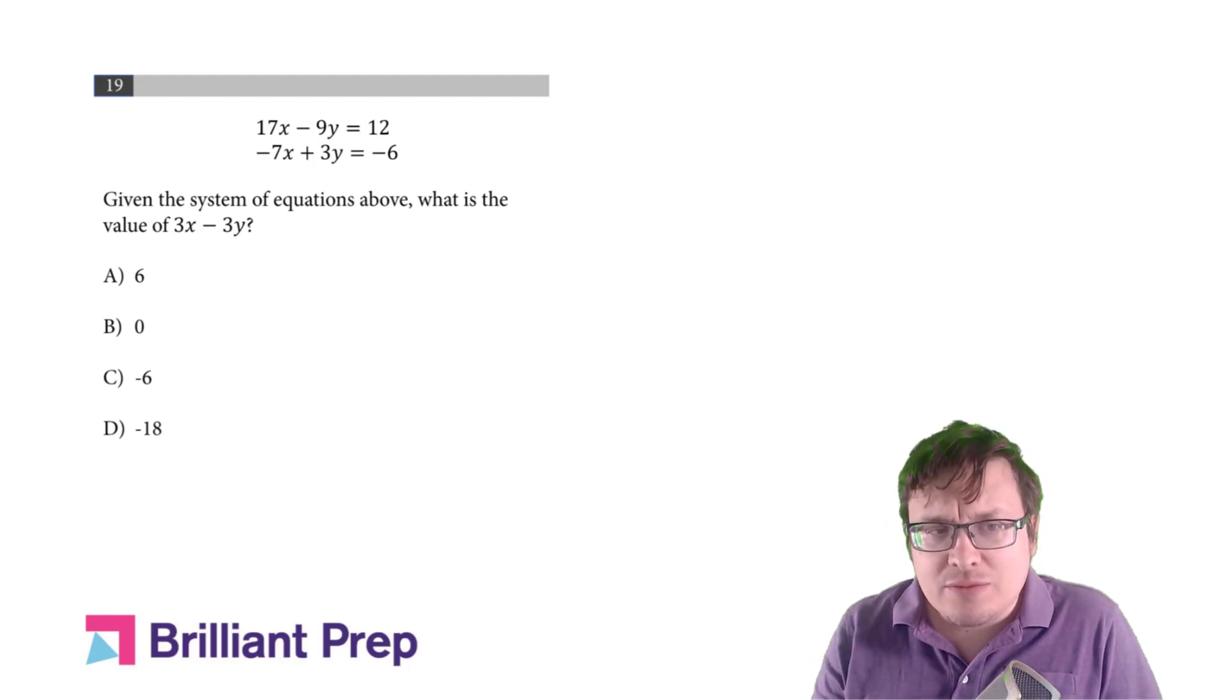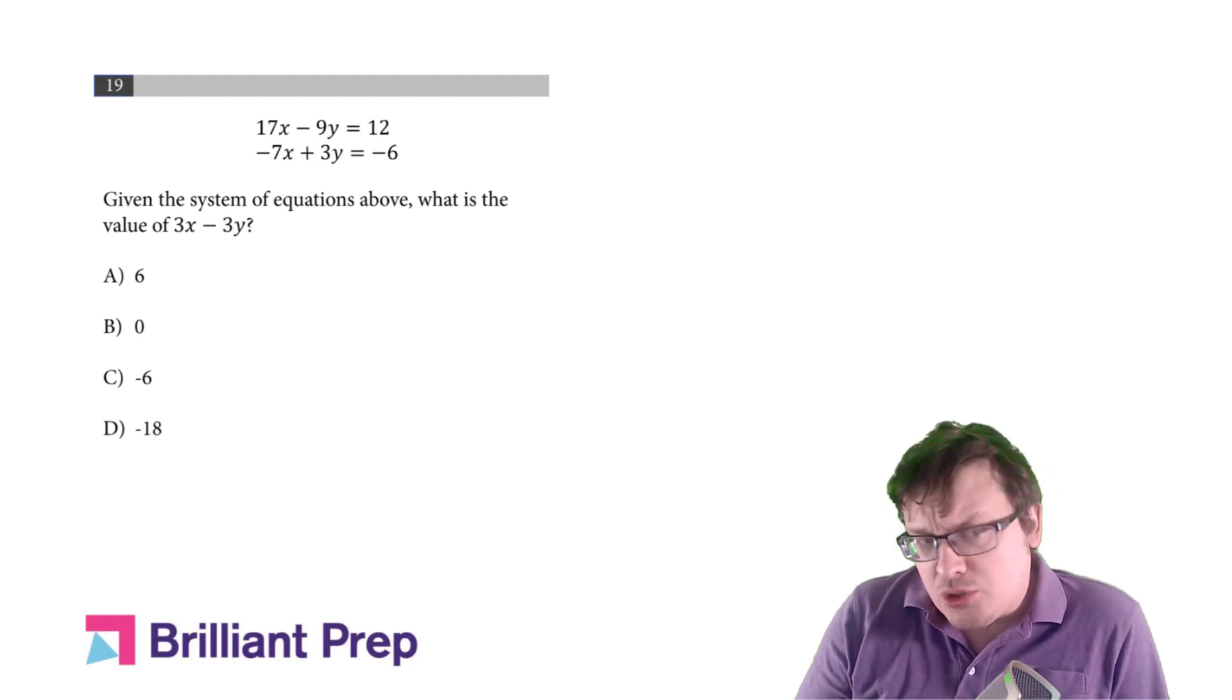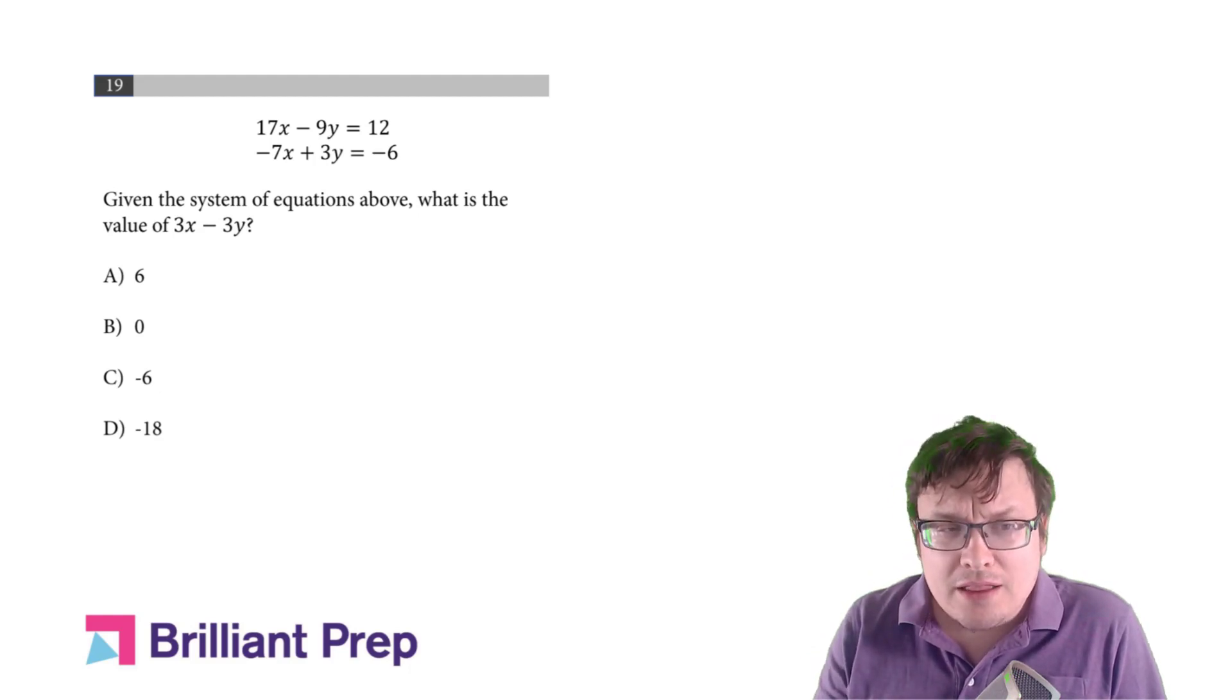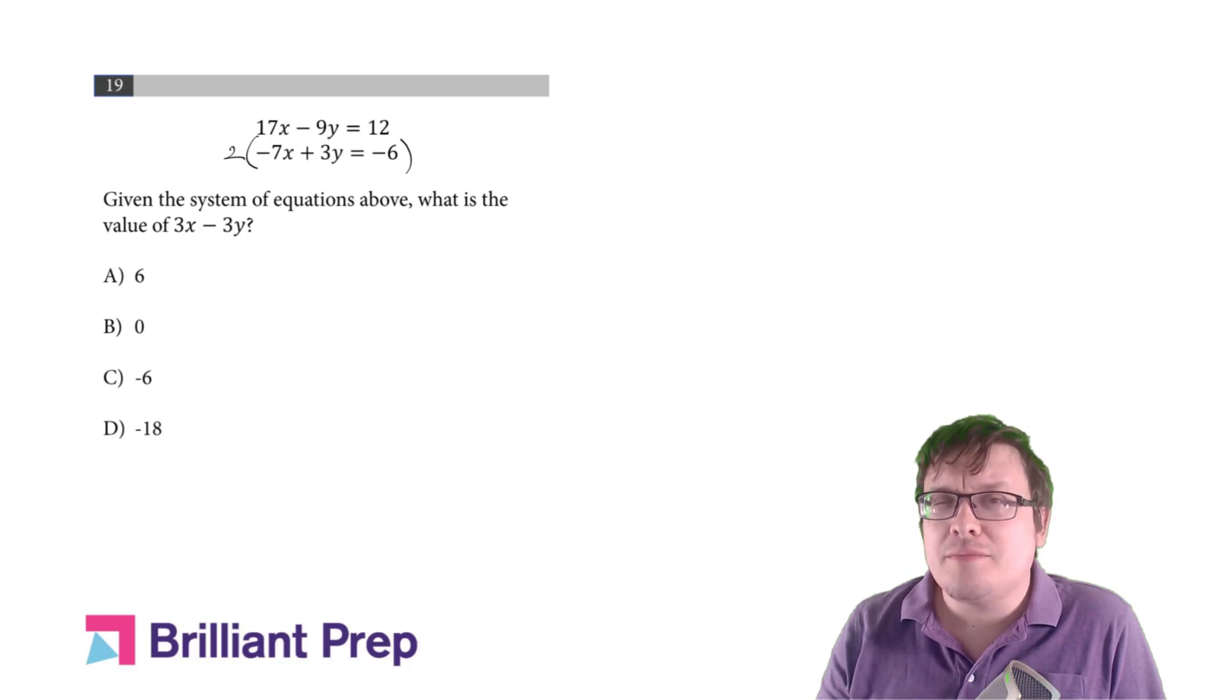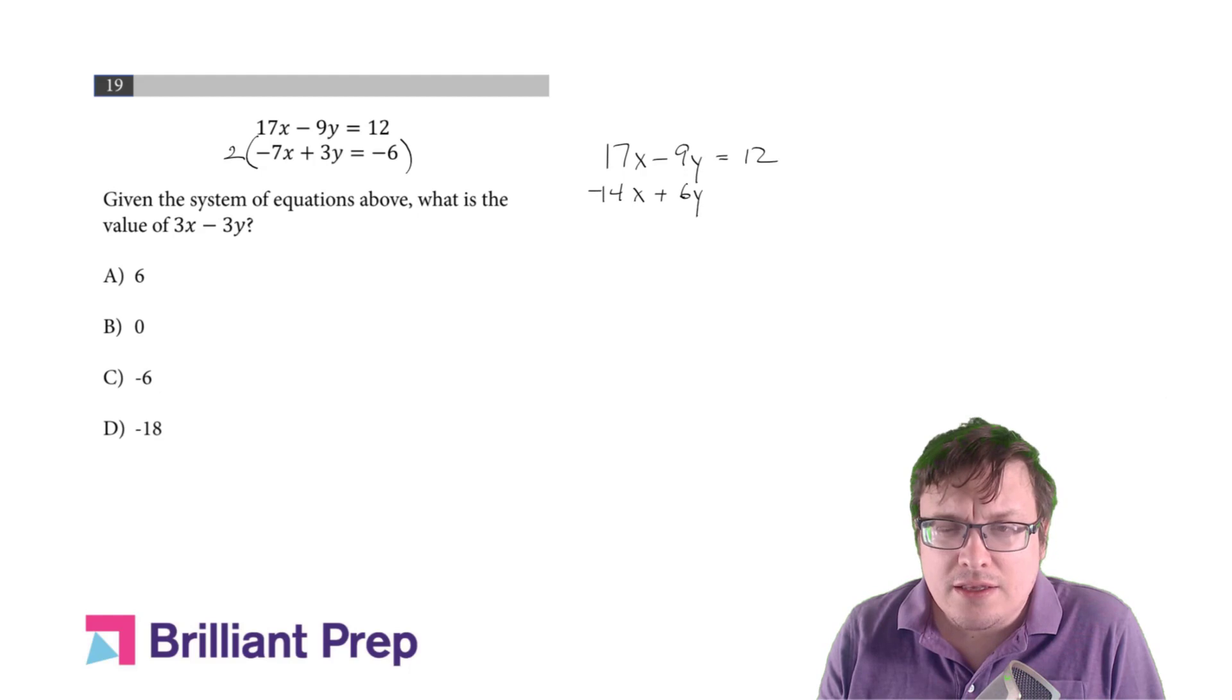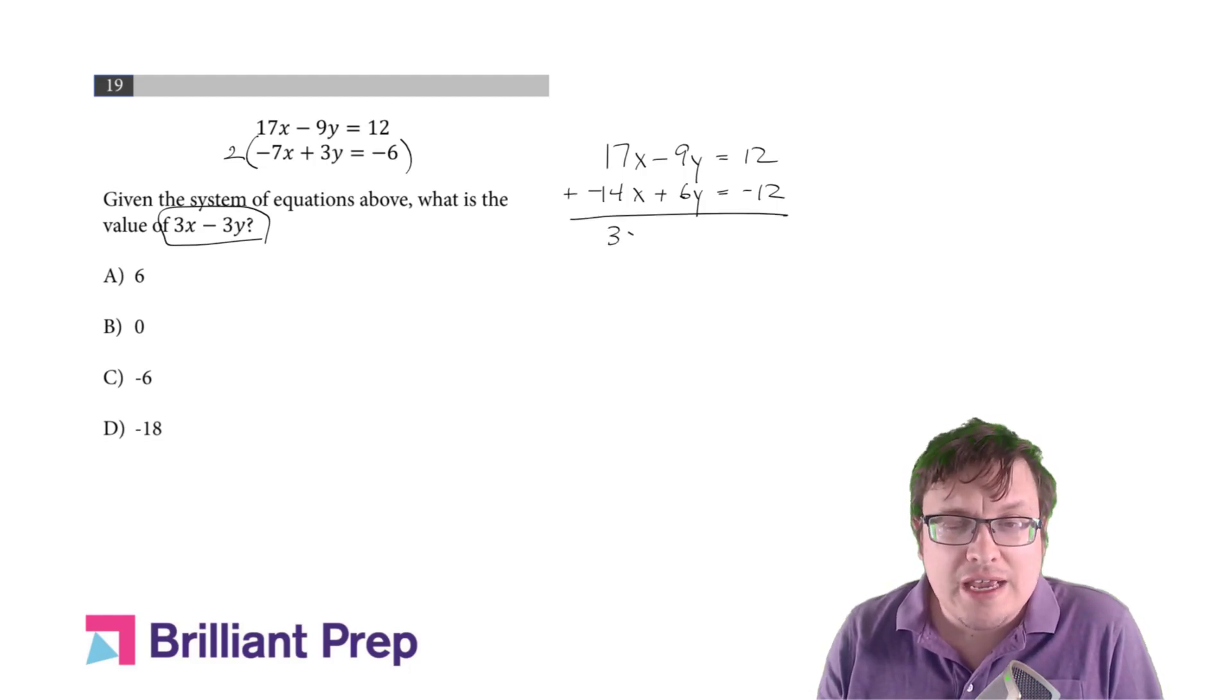We have this system of equations: 17x minus 9y equals 12, and negative 7x plus 3y equals negative 6. I could solve for x and solve for y, or I might notice a little trick here. Let's double this bottom equation. So 17x minus 9y equals 12, and negative 14x plus 6y equals negative 12. Here's the trick. They just want 3x minus 3y. So can we get it directly? We can. Go ahead and add these equations. You get 3x minus 3y equals 0, and there you go.